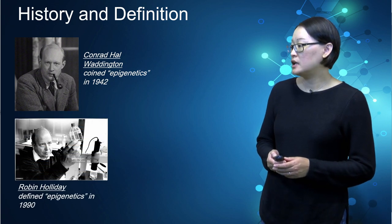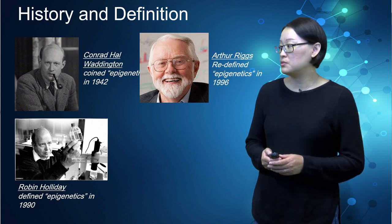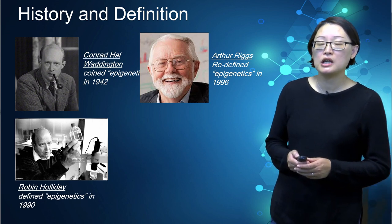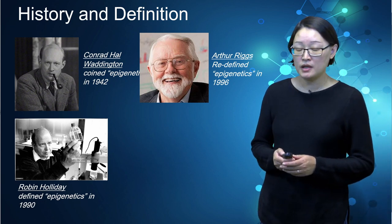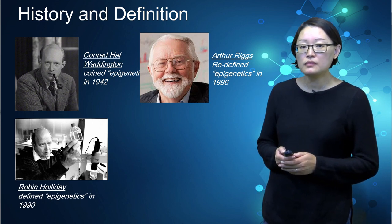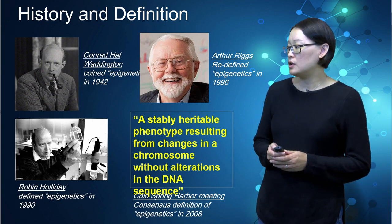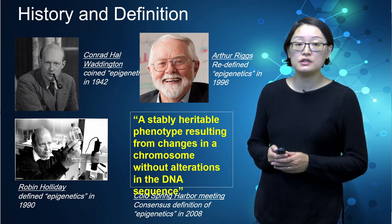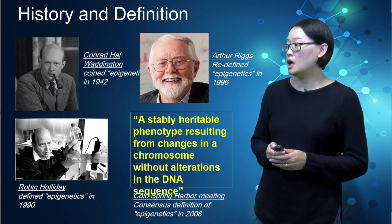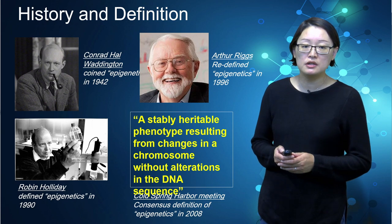Later on, in 1990 and in 1996, Robin Holliday and others redefined epigenetics more specifically as something that can influence the development of an organism and also the function of genes. And in 2008, a consensus definition of epigenetics was given at the Cold Spring Harbor meetings as a stable heritable phenotype resulting from changes in the chromosome without alteration in the DNA sequence.